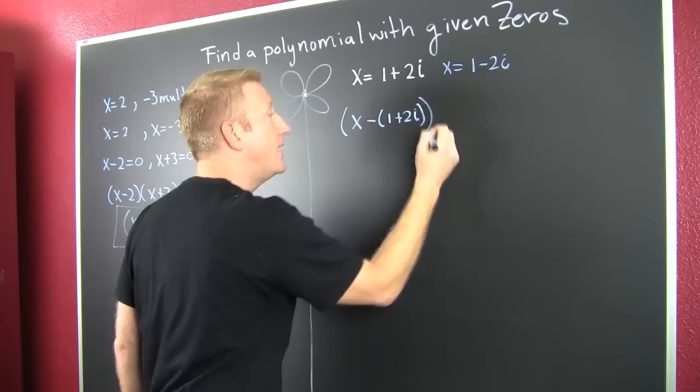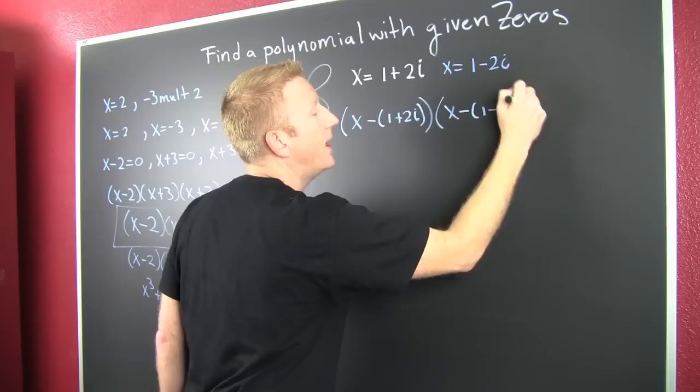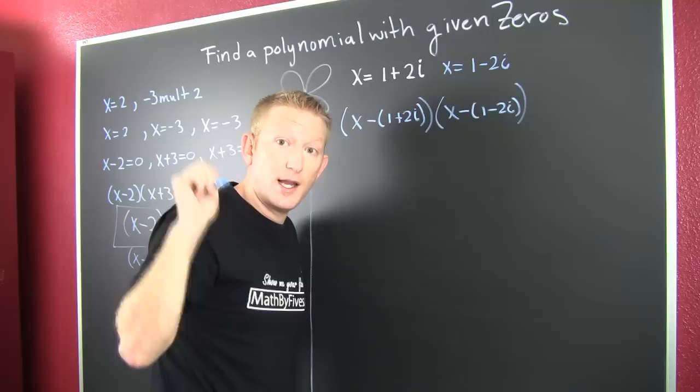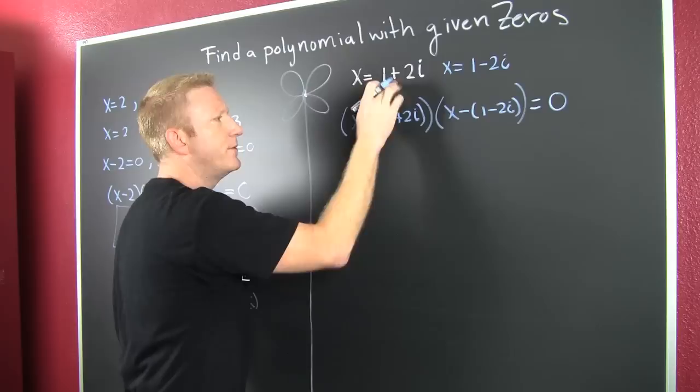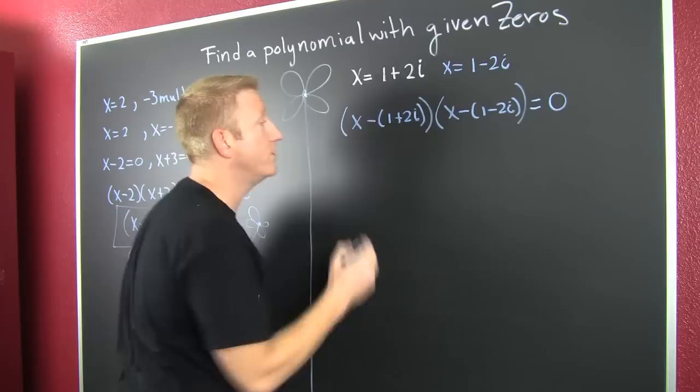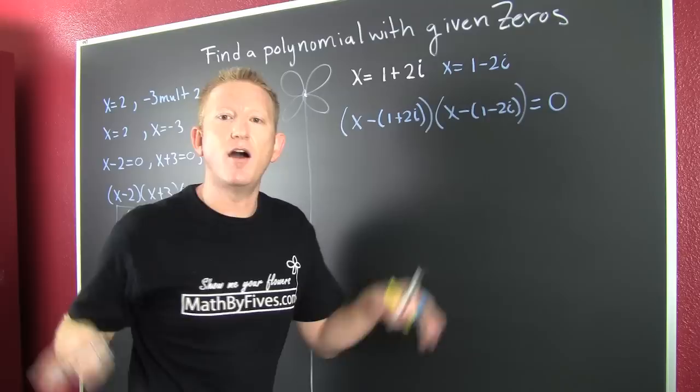So, this is x minus this guy, one plus two i, times x minus this guy, one minus two i. I'm stepping skips here. Like over there, we said you probably just jump here. So, it's x minus the zero. That's the factor. Let's go ahead and multiply this out so that we can find that polynomial really does have real coefficients.